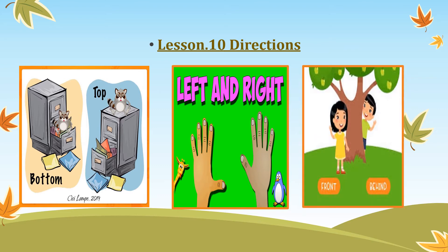Another example of these common direction words are front and behind. You can see here one boy is standing behind the tree and one girl is standing in front of the tree. These words are commonly used in daily life. Some other words like above and below are also used in daily life.